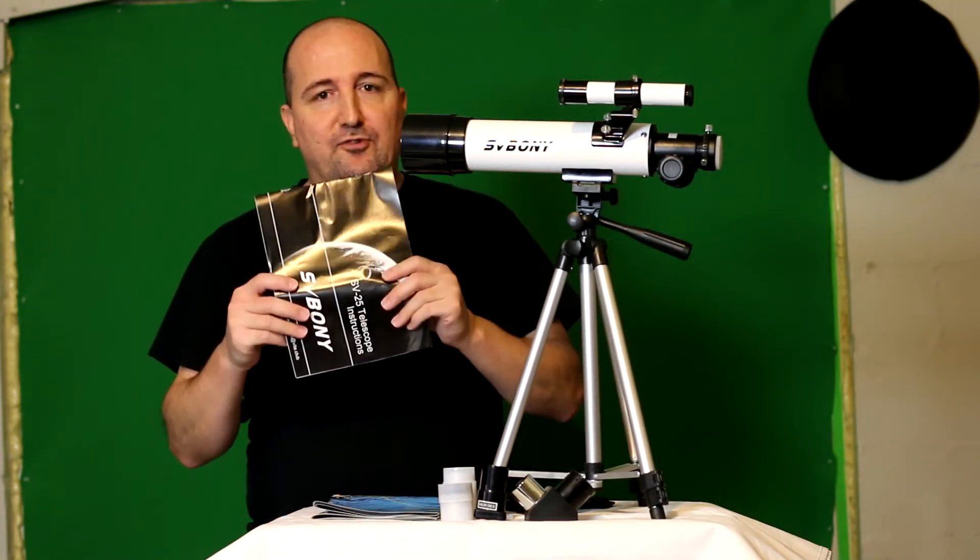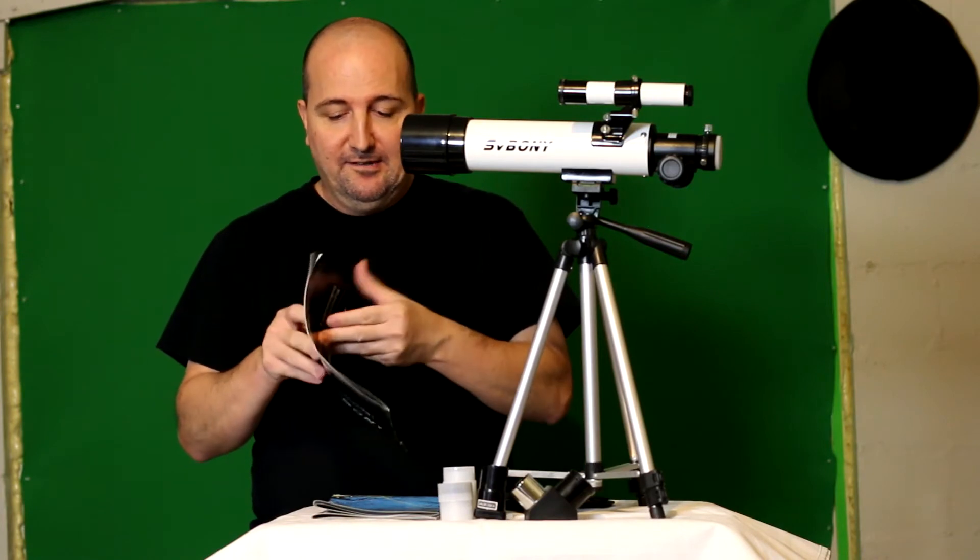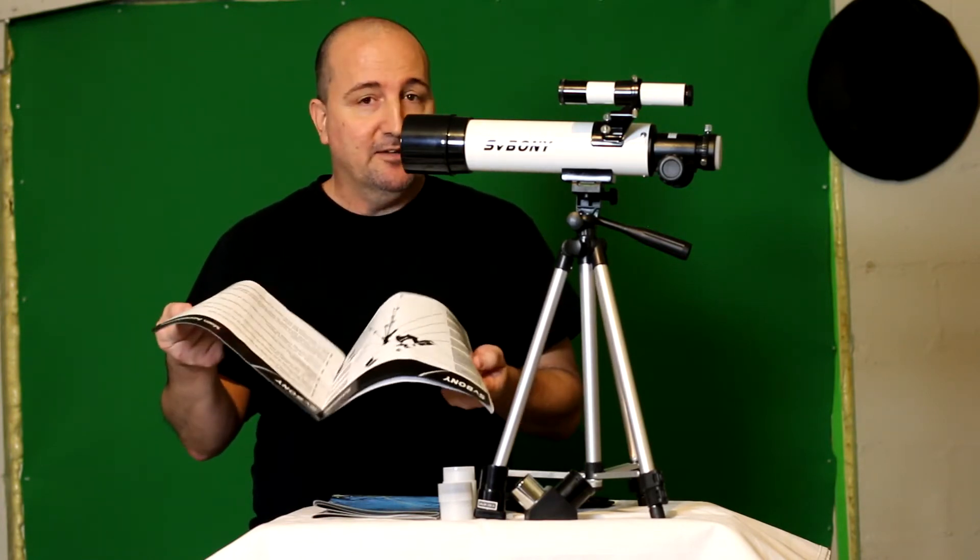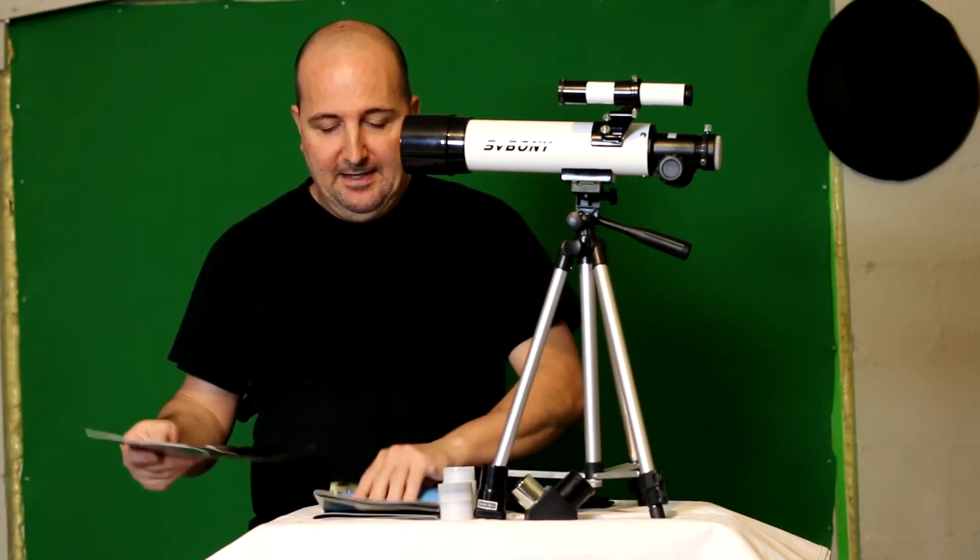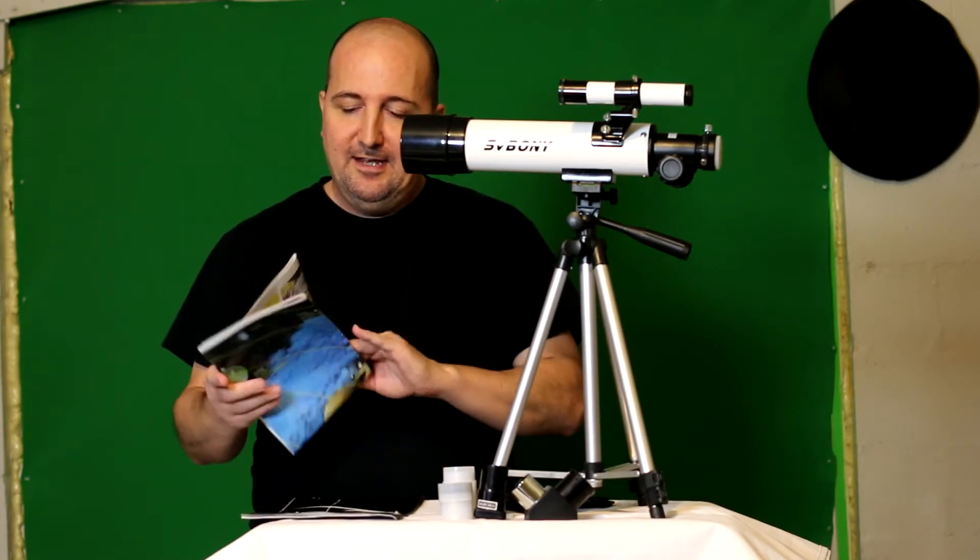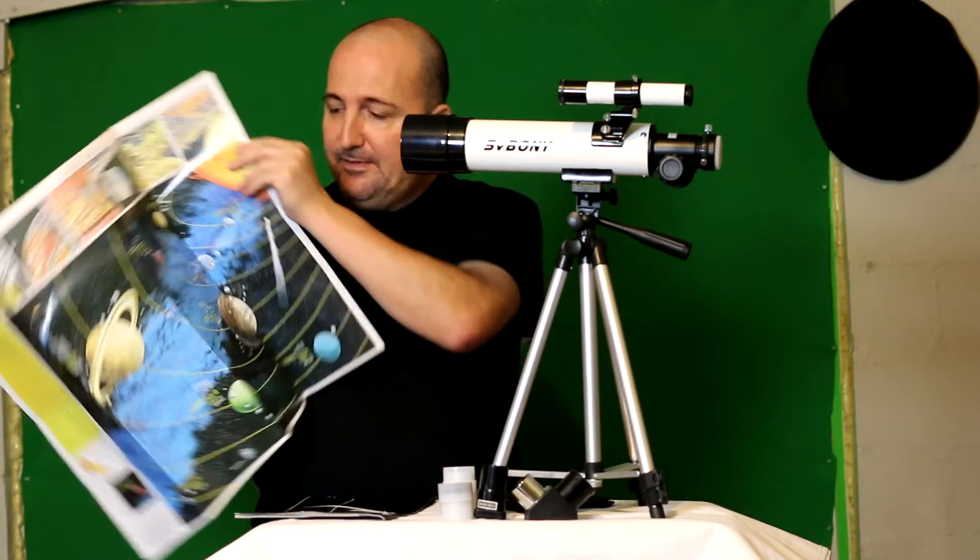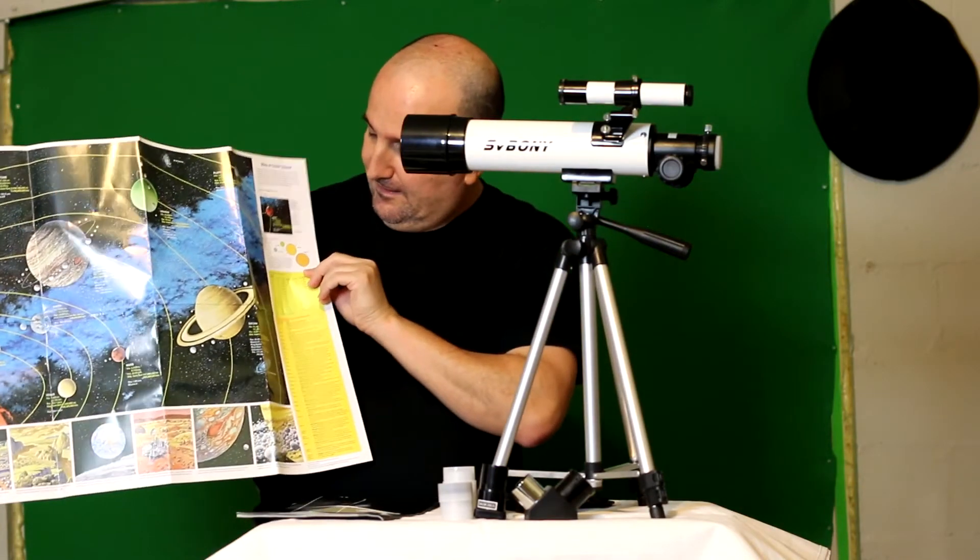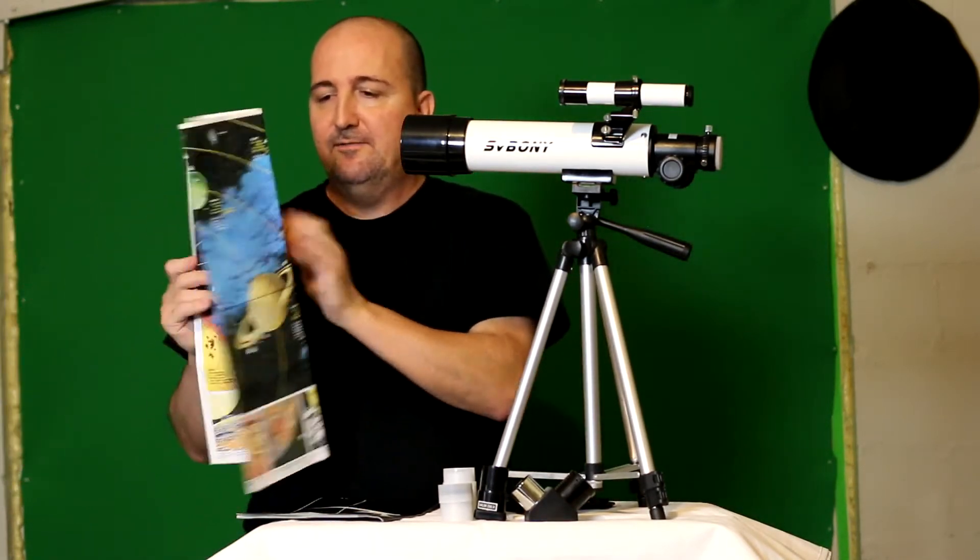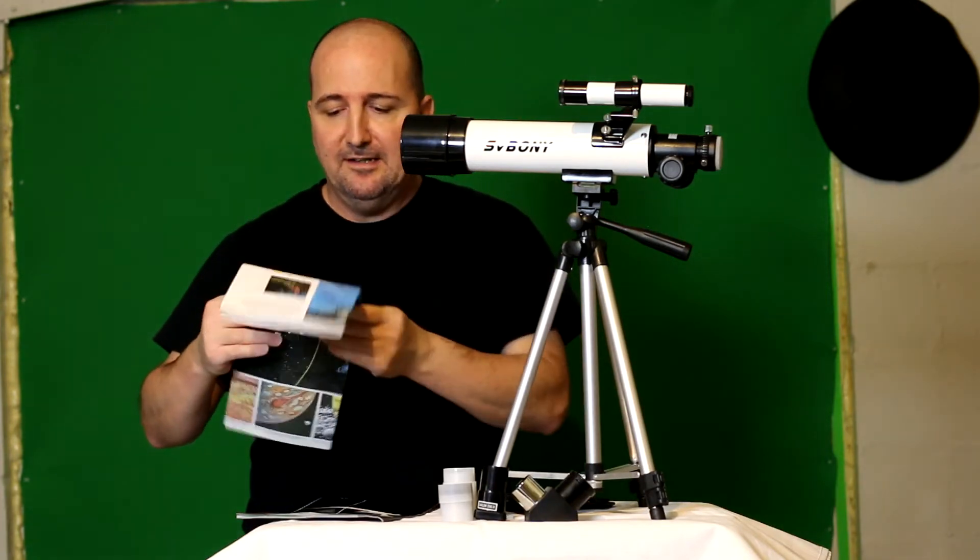It does come with a nice little instruction booklet. It also explains pretty much all the eyepieces and everything about the scope, which is really nice. And it also has a nice little solar system map, which I think I have it upside down. It's very nice, very large, very nice. A great accessory again that complements the telescope.